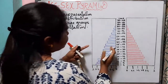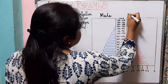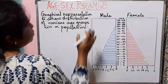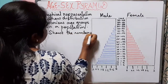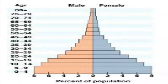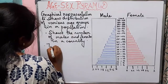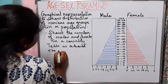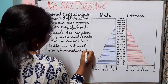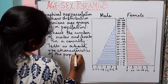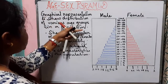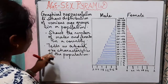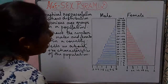The left side of the age-sex pyramid represents the male population and the right side represents the female population. The age-sex pyramid also shows the number of males and females in a country and tells us about the characteristics of the population.